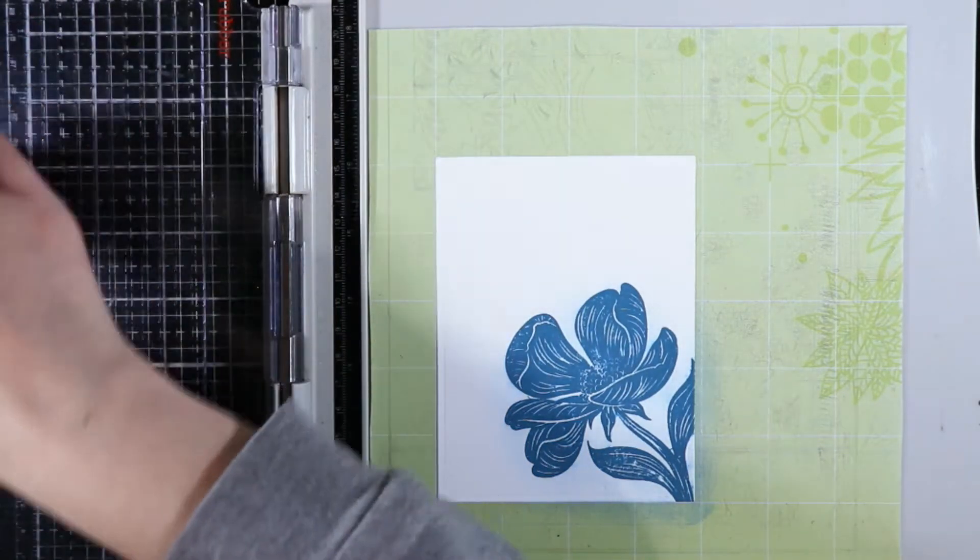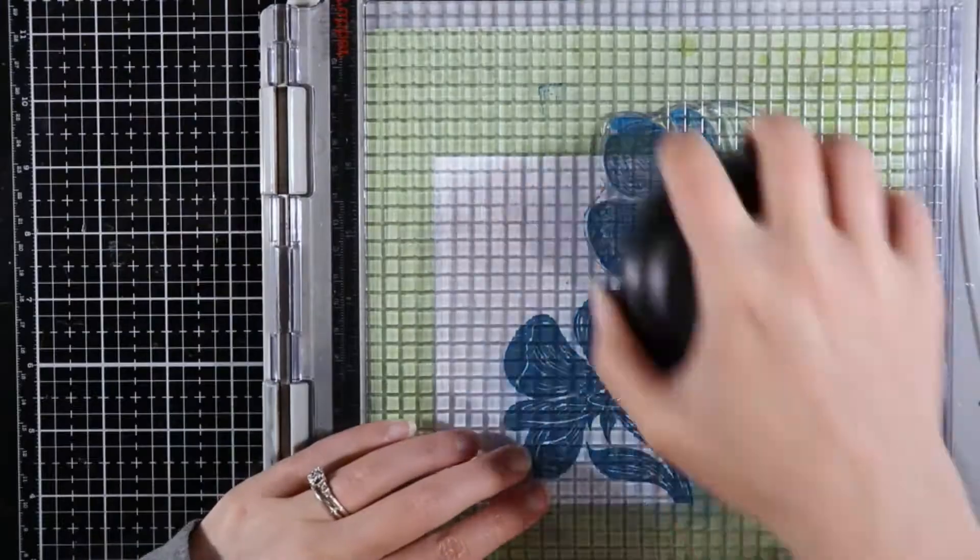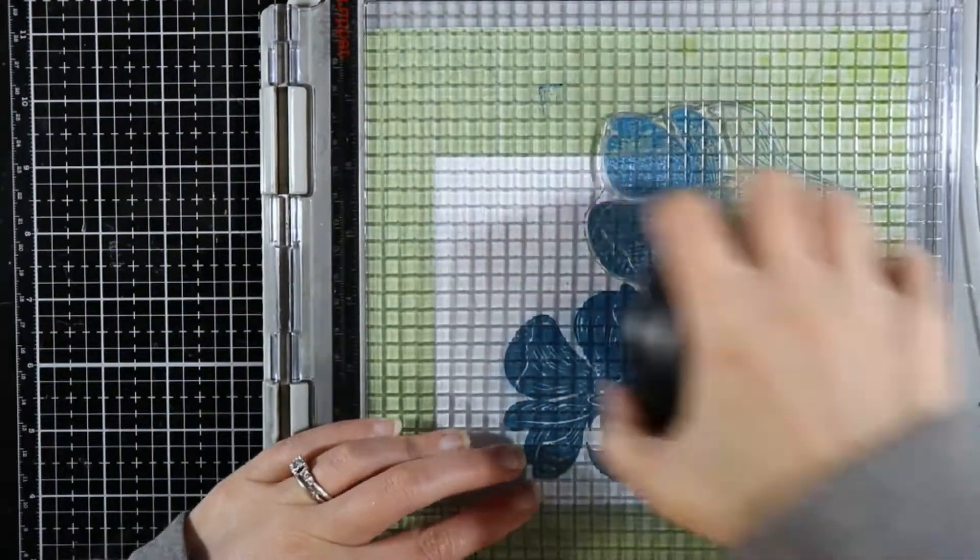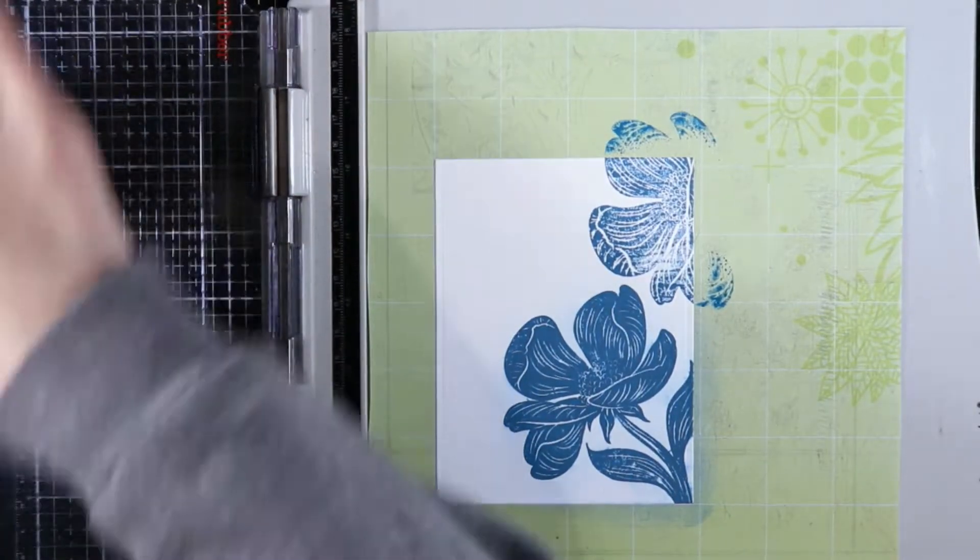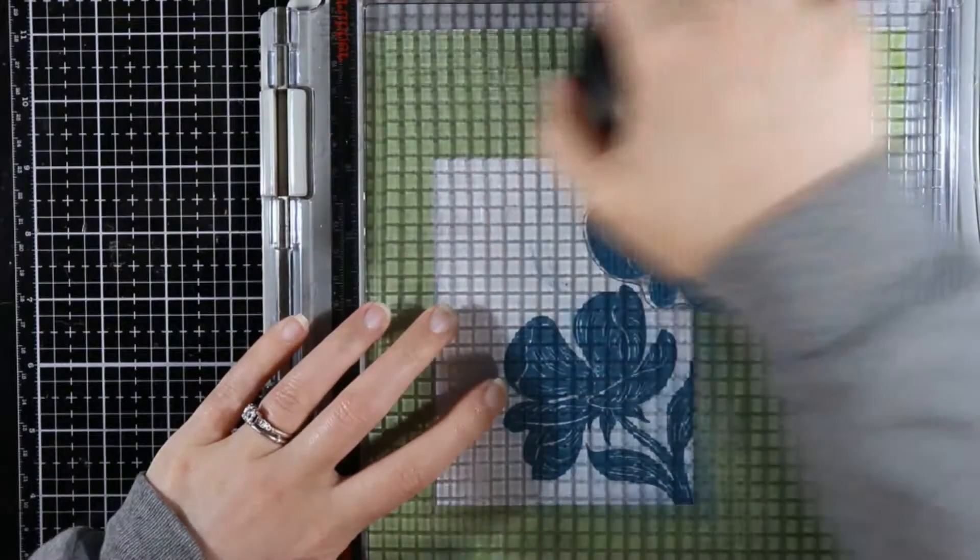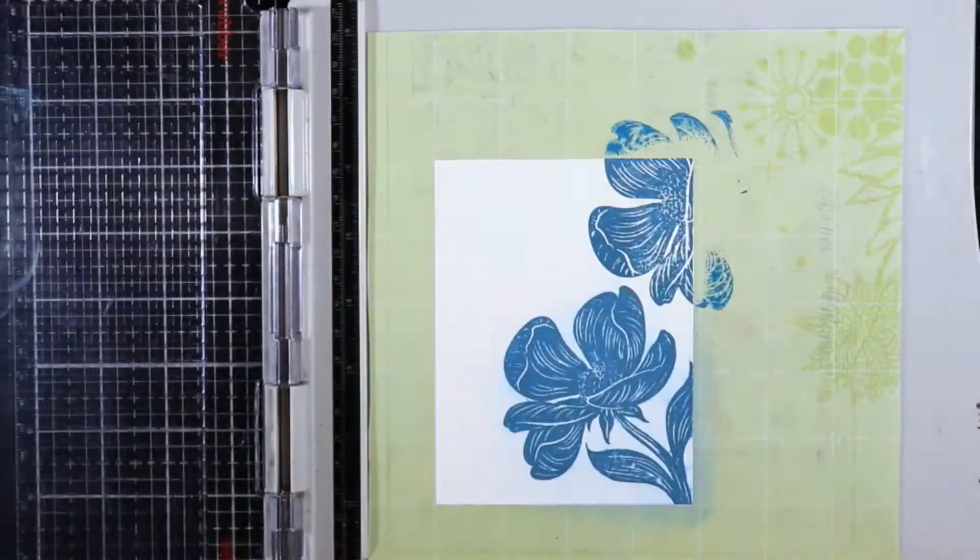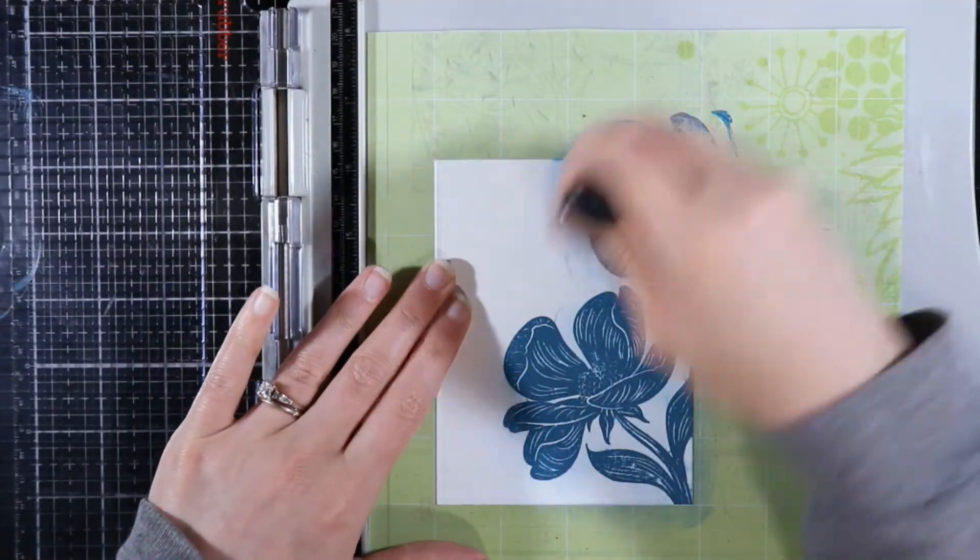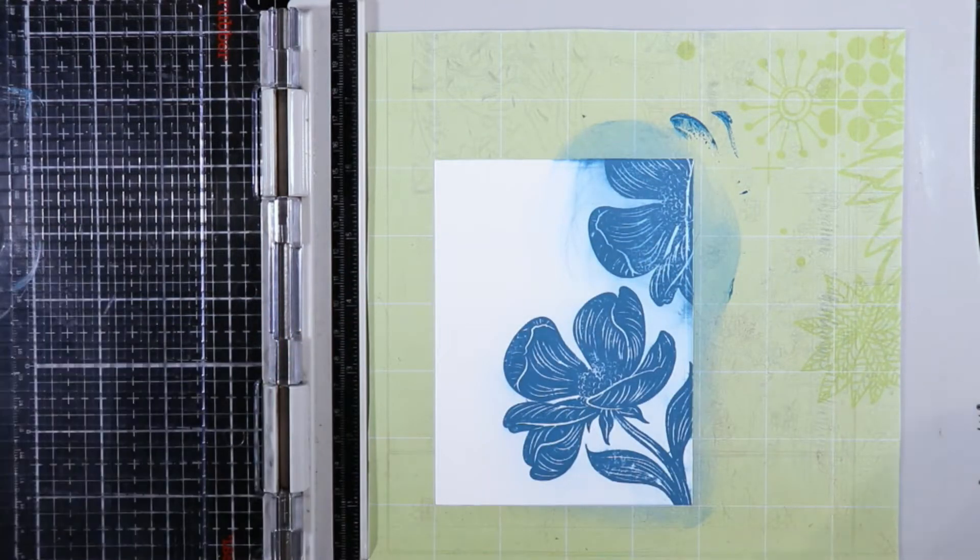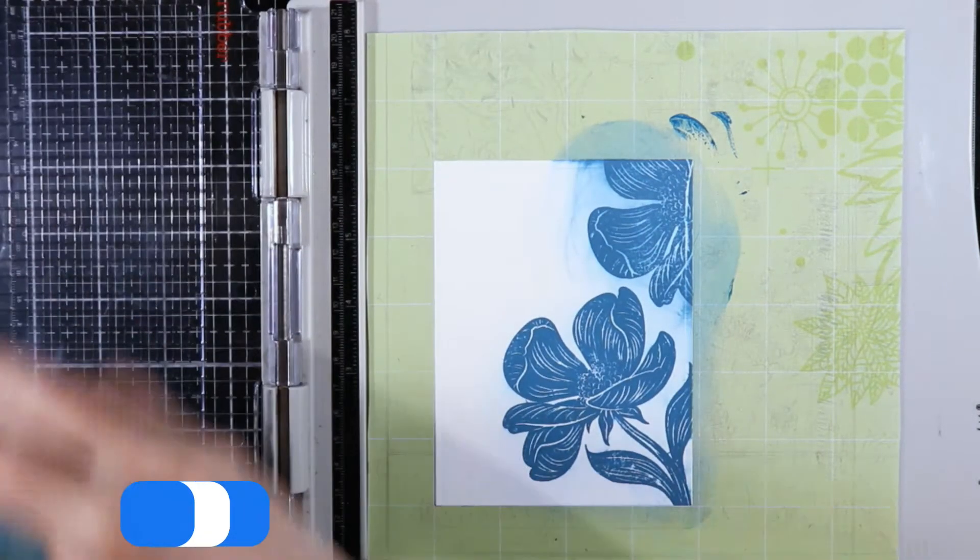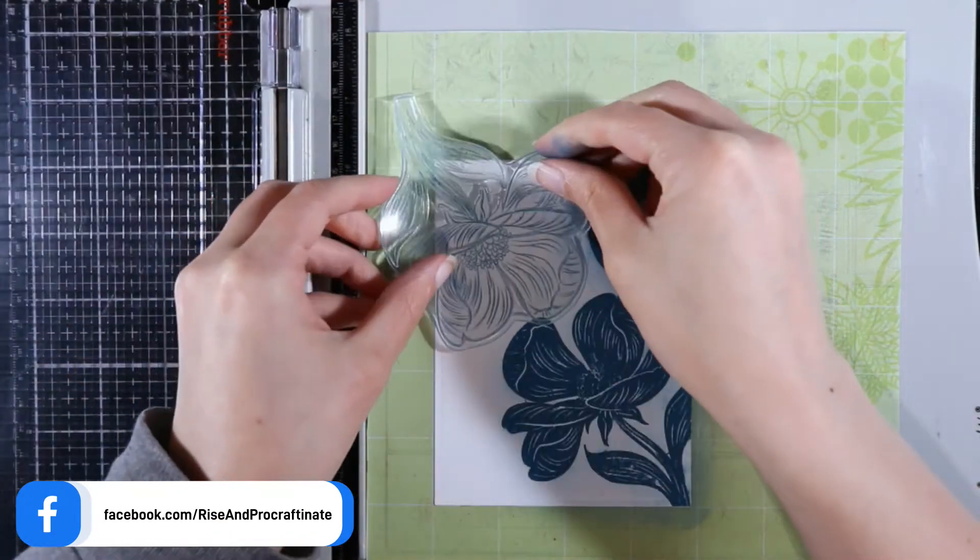Now we're going to stamp the stamp again up here on the corner. I'm going to stamp it again because I still didn't get a very good impression. I don't know why I wasn't getting very good impressions. Sometimes I just don't get very good impressions with solid stamps unless I'm using the Versafine. I imagine Versafine might work with this. I did not try it.